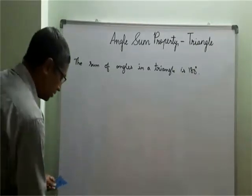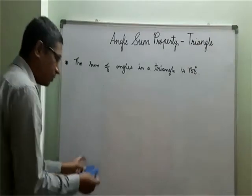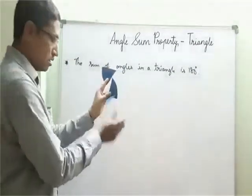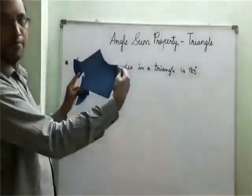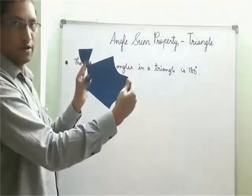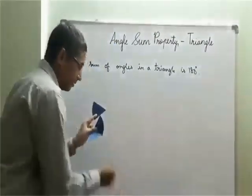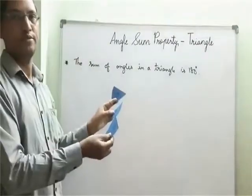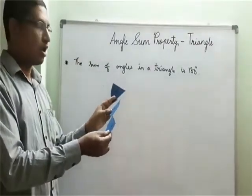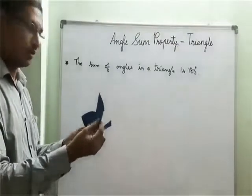Okay children, so what we have done, we have cut the angles like this. This is our triangle where all the three angles have been cut. I don't need it, I require only these three angles.